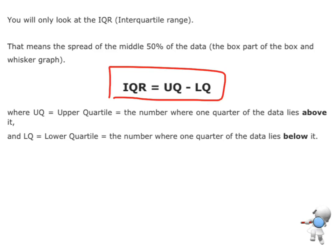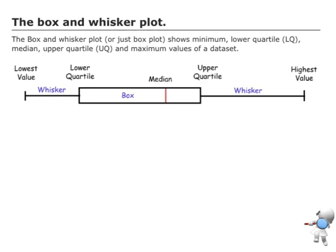There's our formula, and you'll need to remember this one. Interquartile range is the upper quartile minus the lower quartile. There's my lower quartile, there's my upper quartile, and I'm just trying to find out how spread out that middle chunk of data is.